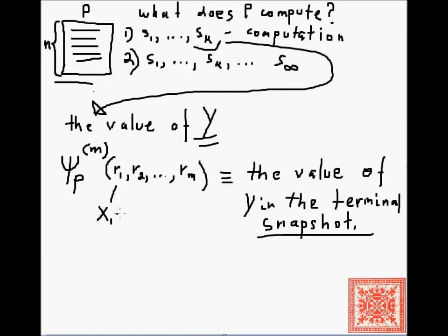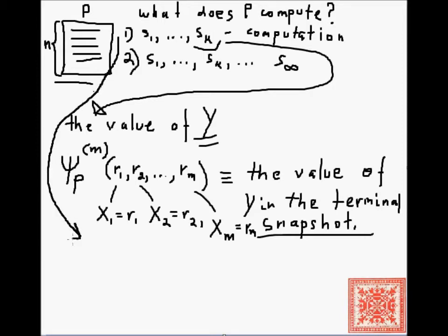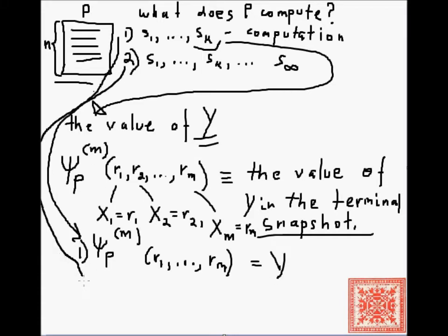A technical note: do not confuse r1, r2, …, rM with x1, x2, …, xM. The variables x1, x2, …, xM are input variables — they receive those values, like registers. The program receives M values, computation occurs, and the value of ψ_P^(M) on those inputs equals Y.